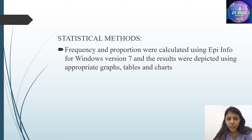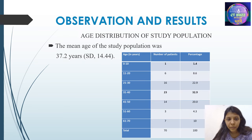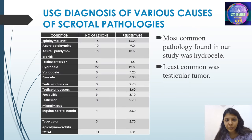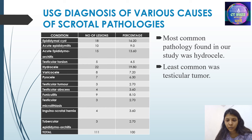Statistical methods: frequency and proportion were calculated using EpiInfo for Windows version 7, and the results were depicted using appropriate graphs, tables and charts. The mean age of the study population was approximately 37 years. The most common pathology found in the study was hydrocele and the least common is testicular tumor.